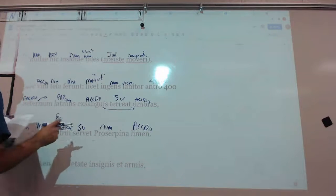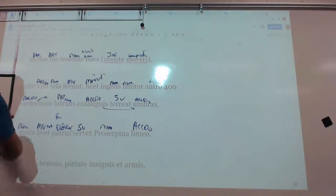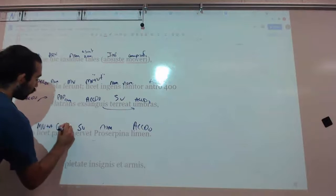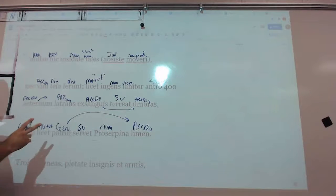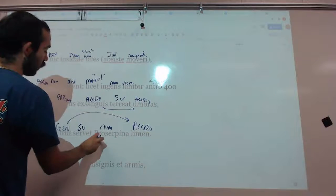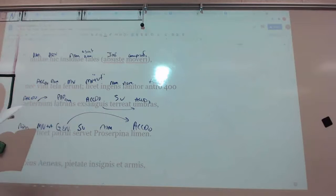It is permitted, licet ut, that Proserpina servet, she serves the threshold for, this dative, reference, for patrui. Oh, I'm sorry, not a dative, this is a genitive, serves the threshold of her uncle. Guess what, her dad, or her mom, Ceres, or Demeter, is related to Pluto, their siblings, and also her father being Jupiter, it's only fair that she's kind of taking care of her mom. Weird.